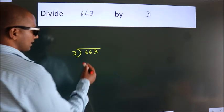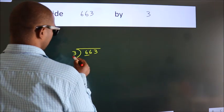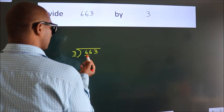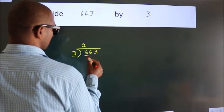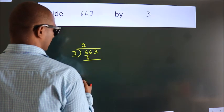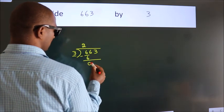Next, here we have 6. Here 3. When do we get 6? In the 3 table. 3 times 2 is 6. Now we should subtract. We get 0.